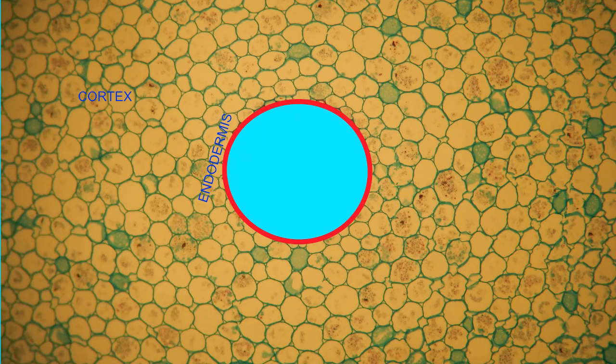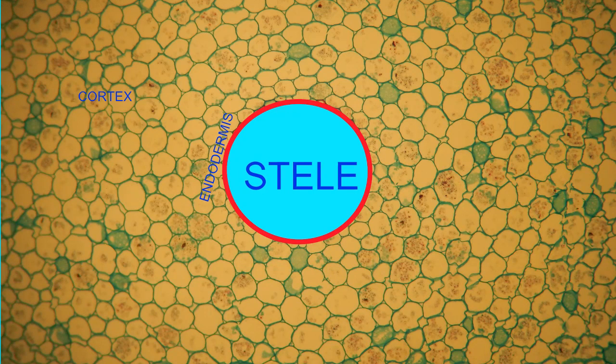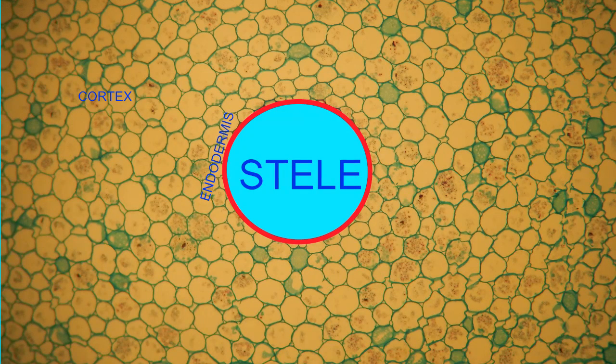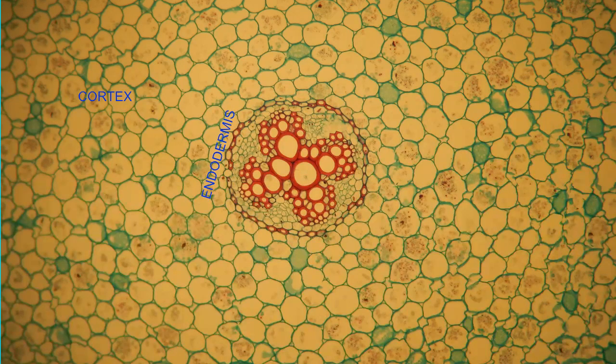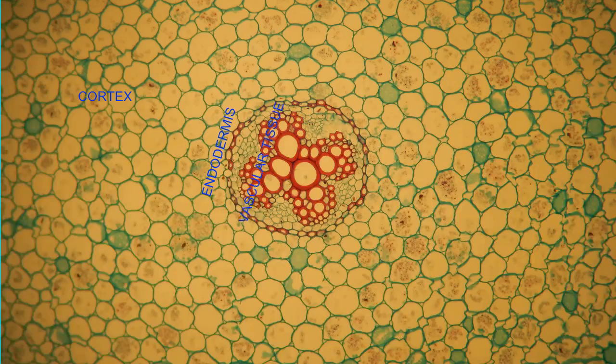Interior to the endodermis, collectively the regions are known as the stele. This includes a central pith, vascular tissue, the xylem and phloem.